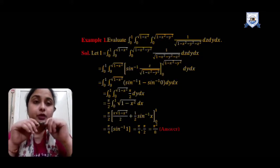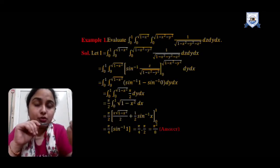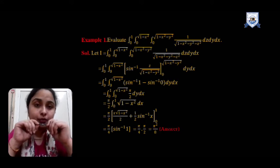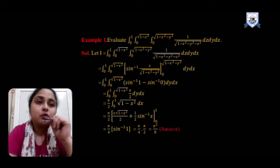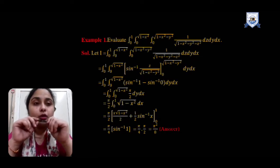This is confirmed because the innermost limit — under root (1 minus x squared minus y squared) — is a function of x and y, so it must be the limit for z. Now integrating first with respect to z: after the first integration with respect to z, z will be removed. The single-variable x limit will then clearly be for y, and the constant limit will be for x. The function is 1 over the square root of (1 minus x squared minus y squared minus z squared), where z squared is the only variable and the rest are treated as constants.